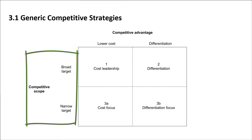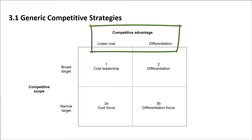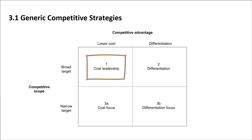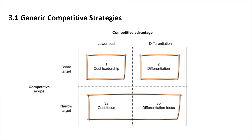On the vertical axis we have competitive scope — a company either focuses on a broad target, sometimes called a generalist, or a narrow target, sometimes called a specialist. On the horizontal axis we see the source of competitive advantage, which can be either lower cost or differentiation. This gives us three different strategies: if we have a broad target and lower costs, we go for cost leadership; if we are differentiated with a broad target, we pursue differentiation; and finally, if we have a narrow target, we will have a focus strategy — either cost focused or differentiation focused, depending on the source of advantage.